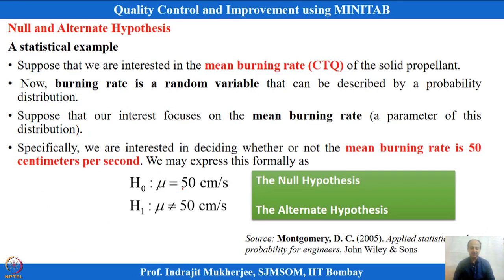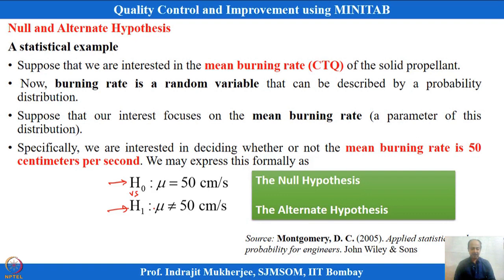Similarly, in a manufacturing example from Montgomery: the mean burning rate is the CTQ of interest and we expect it should be near 50 centimeters per second. We want to prove or disprove this statement. One is the null statement and one is the alternate statement — H-naught versus H1 — which is what we generally check. We will collect some sample observation and based on the mean burning rate X-bar and standard deviation, we either accept mu equals 50 or not.